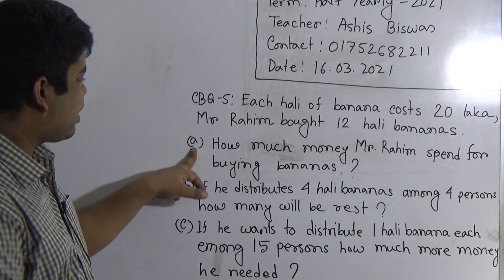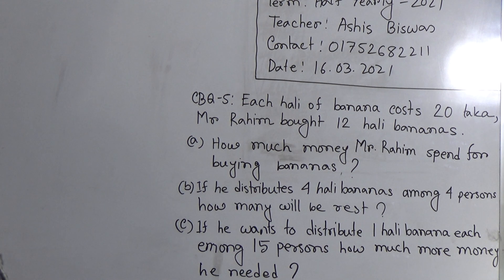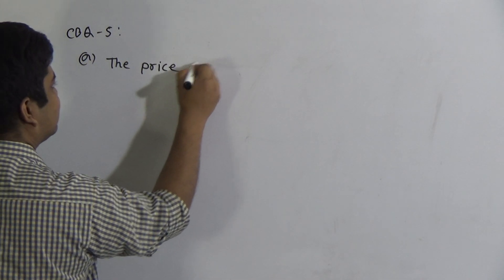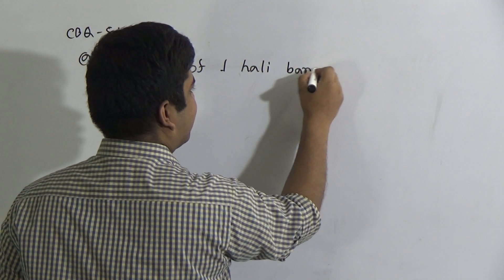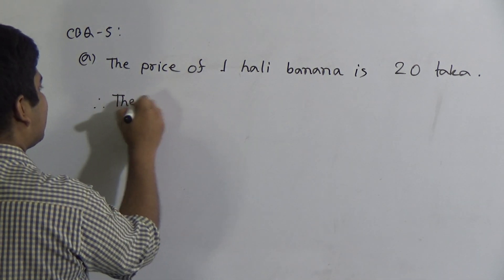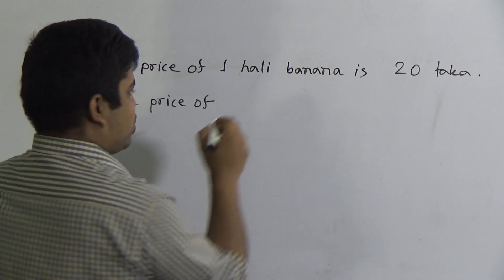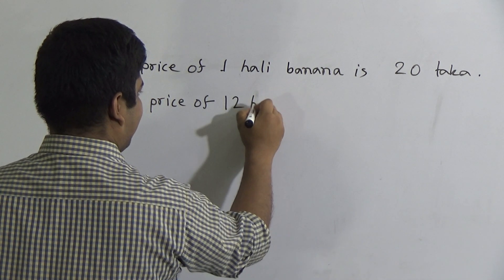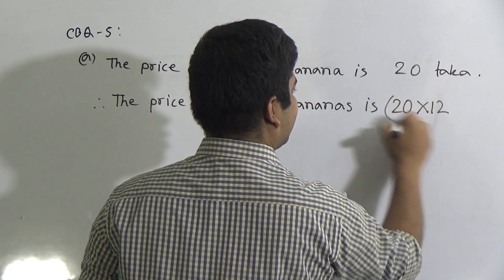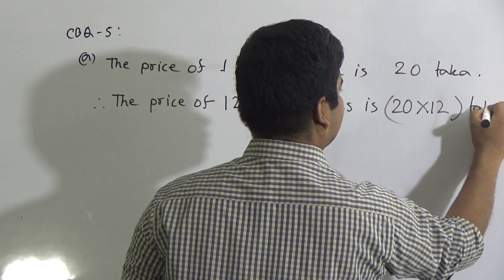Now we start to solve. Question A: How much money did Mr. Rohim spend for buying bananas? The price of 1 hali banana is 20 taka, and Mr. Rohim bought 12 hali bananas. Write CBQ 5, question A. The price of 1 hali banana is 20 taka. Now we need to find out the price of 12 hali bananas: 20 multiplied by 12 taka.